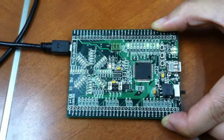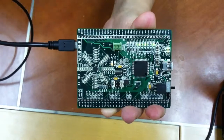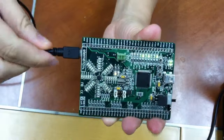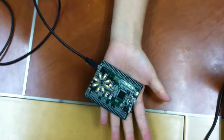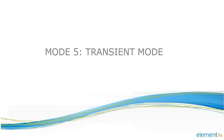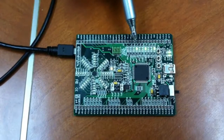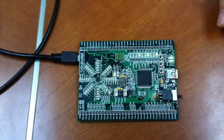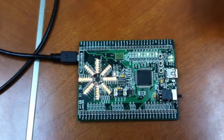Mode 4 is Free Fall mode. Drop the board from a height of a few centimeters or more. The free fall event will be detected and displayed on the LEDs for a couple of seconds. The last mode is Transient mode — the orange LEDs will all illuminate if the board is moving, specifically if it is accelerating or decelerating, and they turn off after a short while if the board is stationary.